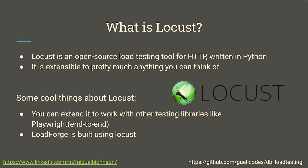So what is Locust? Locust is an open source load testing tool for HTTP. It's typically used for load testing APIs, websites, things like that. It's written in Python. The amazing thing about Locust is that it's super extensible — you can extend it to pretty much anything you want. You can extend it to testing libraries like Playwright, an end-to-end testing tool. You can write it in JavaScript or Python. You can take those Playwright files and load them into Locust, and Locust can create simulated users that go through all those actions. Also, LoadForge — a SaaS product for load testing — built their system on top of Locust. So if you want to save money, just use Locust directly.